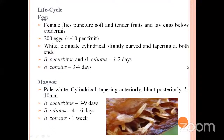Coming to the life cycle, first the eggs: the adult female fly selects soft tender fruits and punctures them with its sting, laying eggs below the epidermis. Each female lays 200 eggs in her lifetime and 4 to 10 eggs per fruit. The eggs are wide, elongate, cylindrical, slightly curved, and tapering at both ends. The egg period for Bactrocera cucurbitae and celiatus species is 1 to 2 days, and for zonatus species, 3 to 4 days.